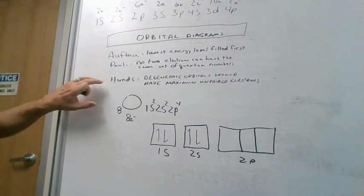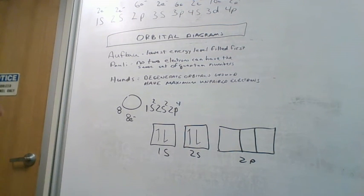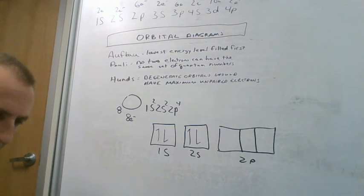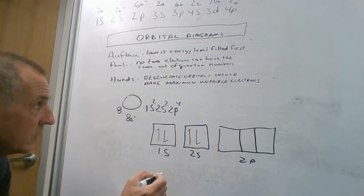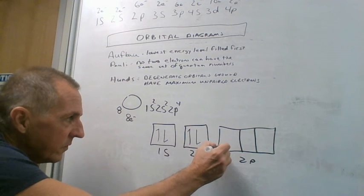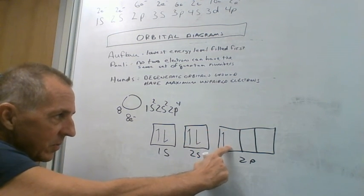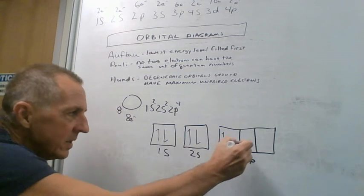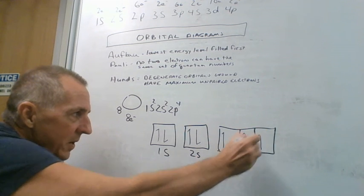This is where Hund's rule takes over, because all three of these p orbitals have the same energy level. They're just orientated differently in space. So the px, py, and pz are what we would call degenerate orbitals because they have the same energy level. When we put this first one in here, we can't put a second electron in here because we want to maximize how many unpaired ones we have.